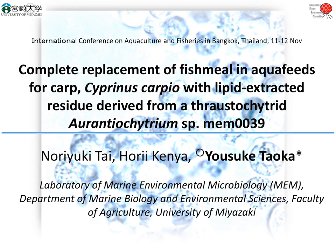Let's start today's class. Today I'd like to introduce one example of bioresource utilization for aquaculture. In my first class I introduced one group of microbes — thraustochytrids. In this lecture I'd like to introduce my research on utilizing thraustochytrids for aquaculture fish, specifically preparing artificial diets using thraustochytrid cells.